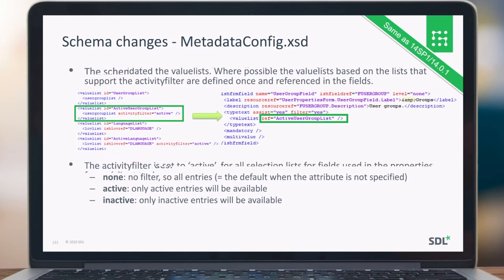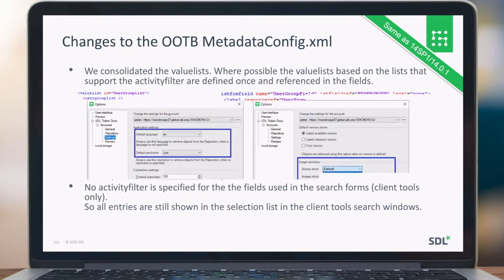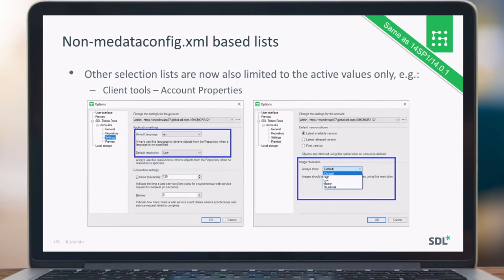We made changes to the out-of-the-box metadata config XML. The activity filter is active for selected lists for fields used in the property form for client tools and the web client. There are still some non-metadata config XML based lists — for example, for account properties, what you see for the language in client tools, only active values are shown. The same applies for image resolutions — you cannot configure it, but it will be limited to active values. Also for selecting the output format: only output formats that are currently active are shown.